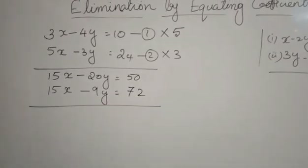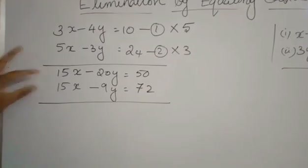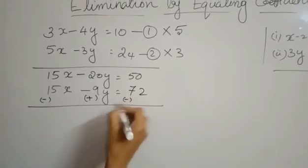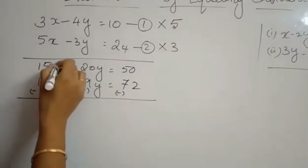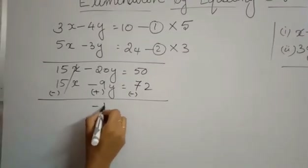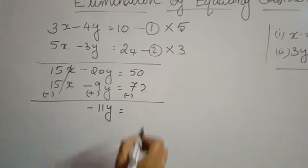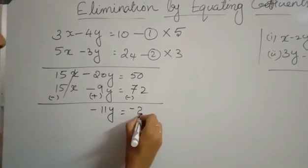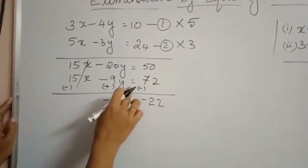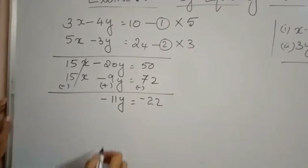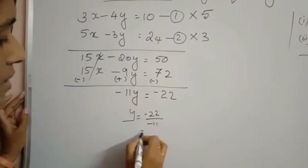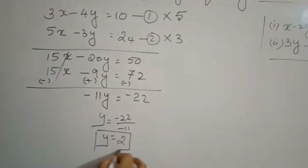Now, since both coefficients of x are the same sign, we subtract. This becomes plus 9y and minus 72. When we subtract, 15x cancels, and plus 9y minus 20y gives minus 11y, equal to minus 22, because 50 minus 72 is minus 22, with the greater number being negative. So y equals minus 22 divided by minus 11, which equals 2. We get the value of y as 2.